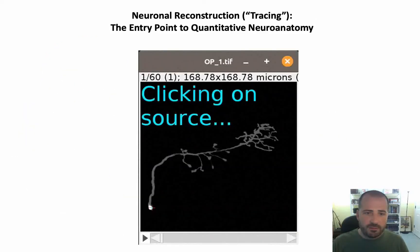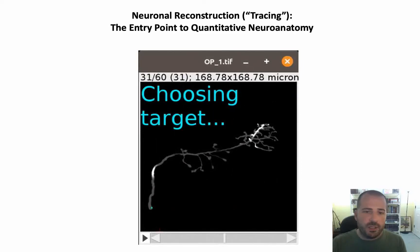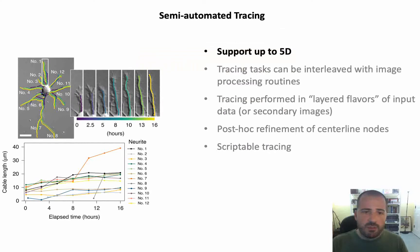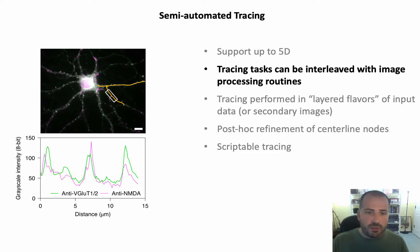Just to put things into perspective, this is how neurons are reconstructed in SNT. Users click on the start and end of a neurite and the program computes or traces the path between the two points. It is a highly supervised segmentation routine that requires human interaction, but yields the most accurate results. A couple of distinctive features of SNT include support of up to 5D images and the ability to interleave tracing tasks with other routines, as in this example where intensity profiles of traced paths were obtained to identify sites of synapses along dendrites.